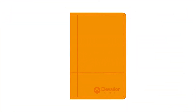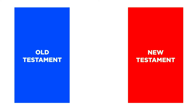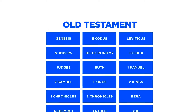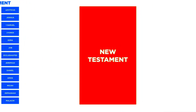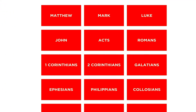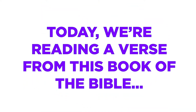One way to find a verse in the Bible is to use the table of contents. The table of contents is at the very beginning of the Bible and it's split into two sections: the Old Testament and the New Testament. The word testament means promise. There are 39 books in the Old Testament — those books tell the story of the promise God made. There are 27 books in the New Testament — those books tell the story of how God's promise came true. Today we're reading a verse from this book of the Bible.